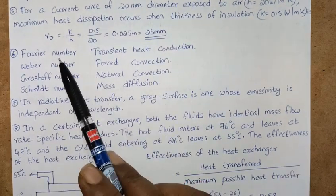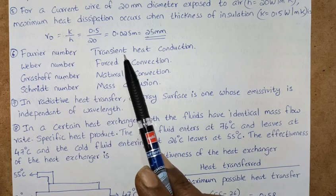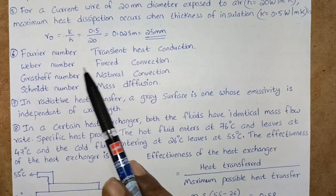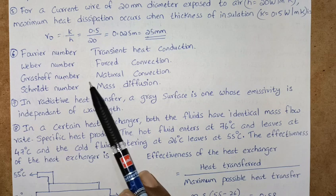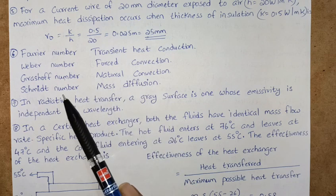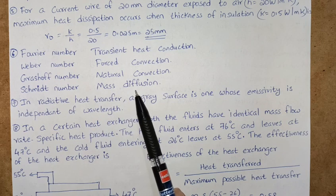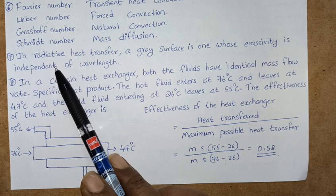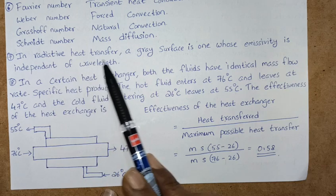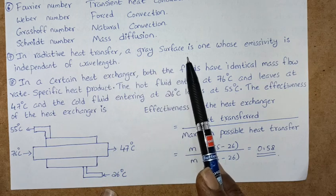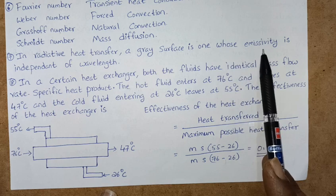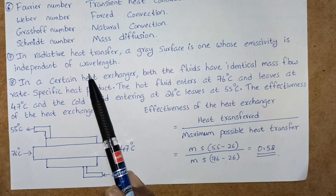Fourier number is transient heat conduction, Weber number forced convection, Grashof number natural convection, Schmidt number mass diffusion. Next, in radiative heat transfer, a gray surface is one whose emissivity is independent of wavelength.